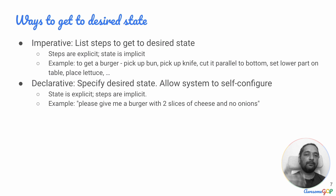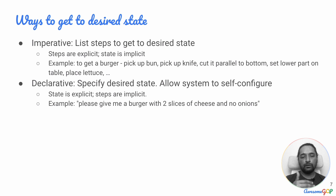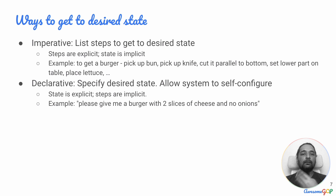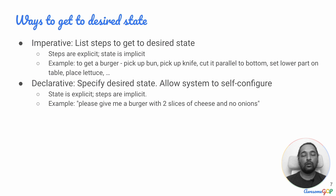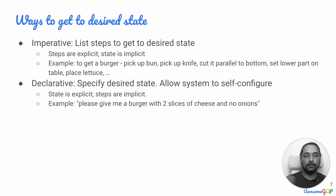In the declarative approach, you're just specifying the end desired state and allowing the system to move from whatever is the current state to get to the desired state. So the state is explicit and the steps to get there are done by the system — they are implicit. For example, in the burger example, you could go to a restaurant and say 'give me a burger with two slices of cheese and no onions.' You express the desired result and it is up to the chef to get you that burger in that state.